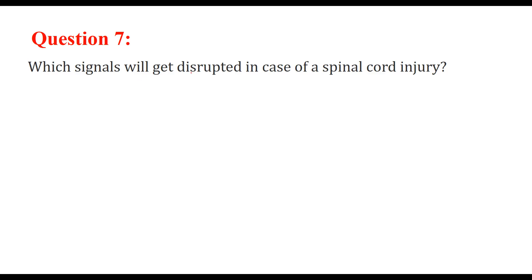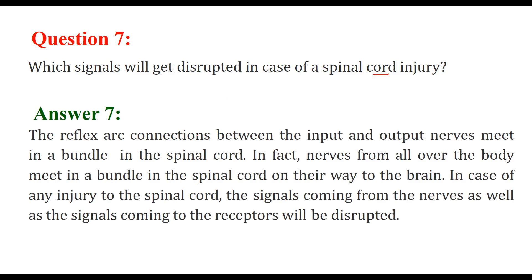Which signals will get disrupted in case of a spinal cord injury? The spinal cord sends signals to and from the brain. The connection between input and output nerves meets in a bundle in the spinal cord — nerves from all over the body actually meet in a bundle in the spinal cord on their way to the brain. So in case of any injury to the spinal cord, signals coming from the nerves as well as signals from the receptors will be disrupted.